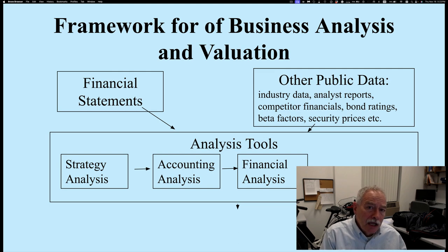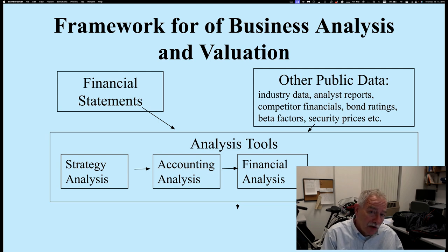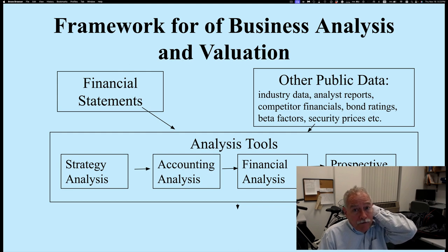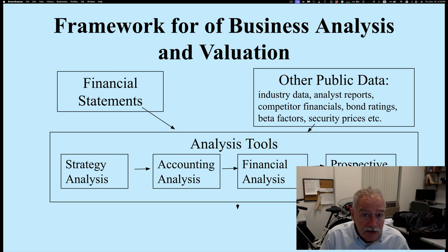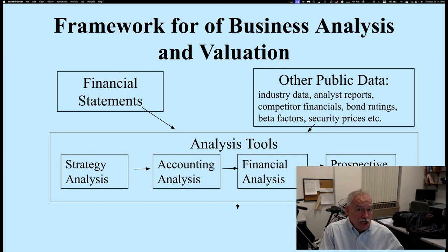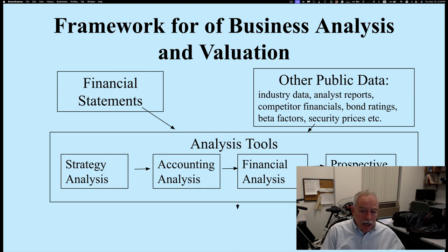The third part we're touching on today is financial analysis, where we dig into ratios to understand how well the company stacks up compared to the prior year and compared to other companies in the same industry. And if you're going to do a valuation, we come up with an estimated value of the firm using a prospective analysis — forecasting complete financial statements for the next 10 to 15 years, then discounting that back at the appropriate discount rate, which is the cost of equity capital. You can also use a WACC approach if you're looking at ROA, but we'll focus on equity only.